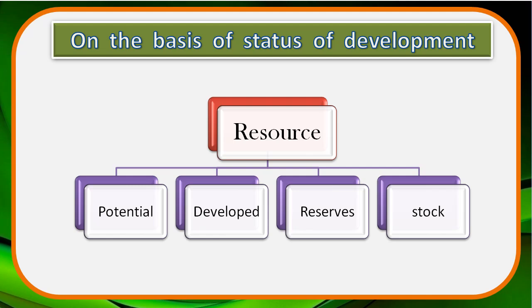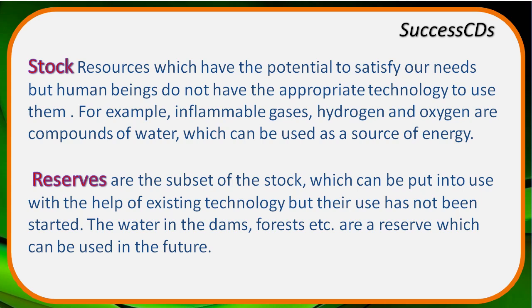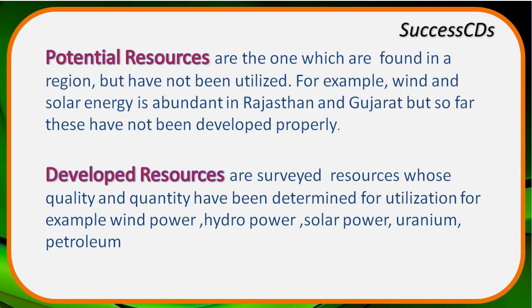On the basis of status of development, there are four classifications: potential, developed, reserves, and stock. Potential resources are those we have in abundance but are not utilizing to their full capacity. Developed resources are those which have been quantitatively and qualitatively surveyed to be used up to their full potential. Reserves can be used as technology is present but are not fully utilized, while stock resources are available but cannot be used due to absence of technology.